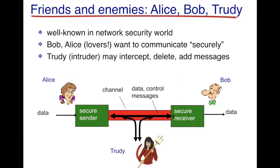Alice and Bob are lovers who want to communicate securely, and Trudy is the intruder who may intercept, delete, and modify messages exchanged between them. Both Alice and Bob have data to exchange through a shared channel used for both data and control messages. We assume Trudy can intercept any of these messages and has the capability of adding and deleting messages. In this insecure channel setting, we want to ensure Alice and Bob can communicate securely.